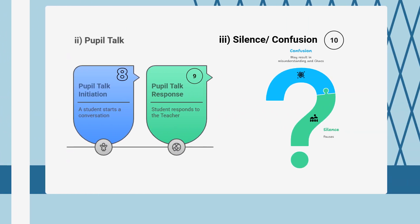The second major category is pupil talk, also called student talk. The eighth component is pupil talk as initiation — the student starts the conversation, for example by asking a doubt. The ninth component is pupil talk as response, where the student responds to the teacher's questions.